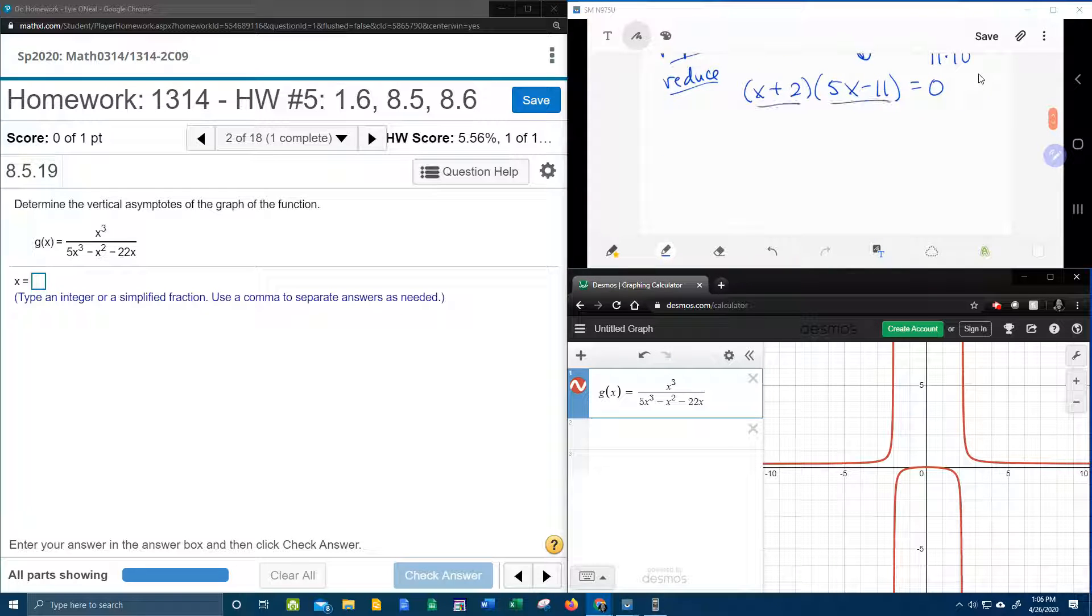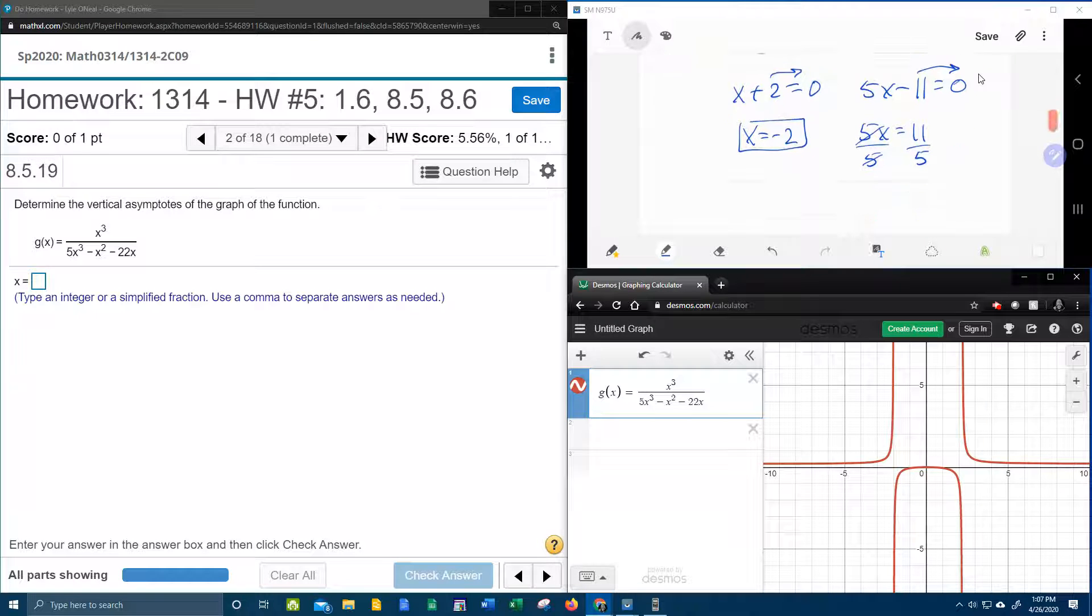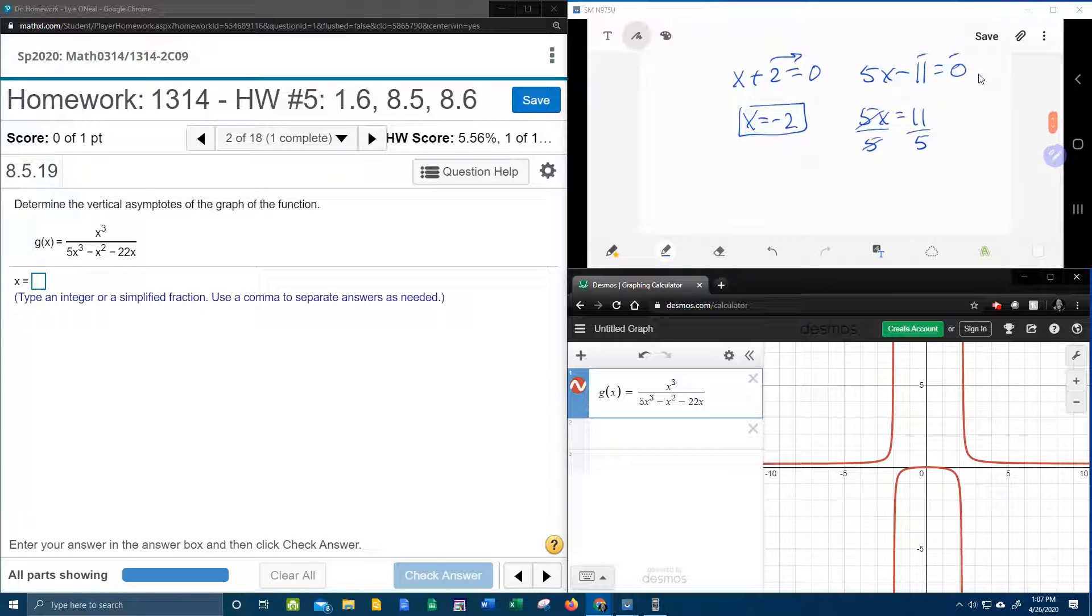So now I can set each factor equal to 0 and solve. Alright, here we go. Moving the 2, that's going to give me x is negative 2. Moving the 11 is going to give me 5x equals 11. I'm then going to have to divide by 5. And you know what? I like it improper. Let's leave that improper.